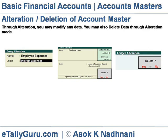To alter or delete an account ledger at Gateway of Tally, select Accounts Info > Ledger > Alter and select the desired account ledger to be altered. The selected master record — account group or account ledger — appears in alteration mode, similar to the creation screen.